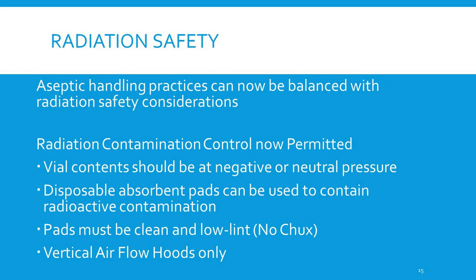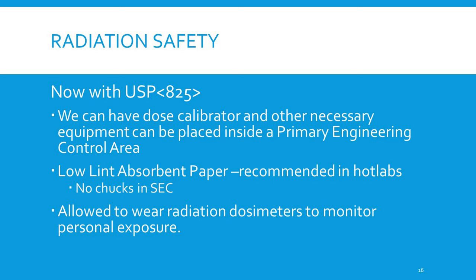In USP 825, aseptic handling practices can now be balanced with radiation safety considerations. Radiation contamination control is now permitted. Vials should be at negative or neutral pressure. Disposable absorbent pads can be used to contain radioactive contamination — pads must be low-lint or no-lint, so no chucks. Vertical airflow hoods only. Dose calibrators and other necessary equipment can be placed in the PEC area. Low-lint absorbent paper is recommended in hot labs, and radiation dosimeters are allowed to monitor personal exposure.